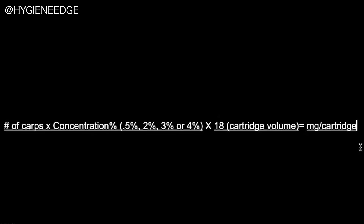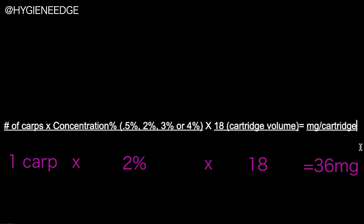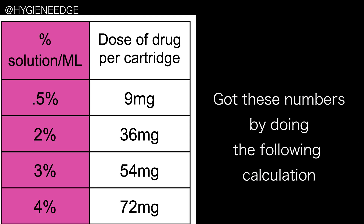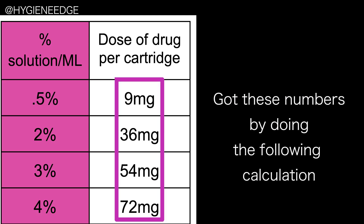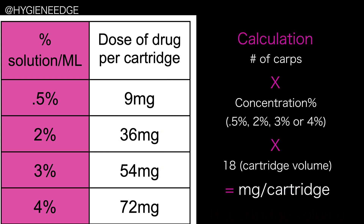So in this example, if I want to give one carpule of lidocaine 2%, multiplied by the cartridge volume of 18, you would get 36 milligrams. Here's a table that shows how many milligrams are in one carp of 0.5%, 2%, 3%, and 4%.